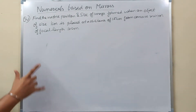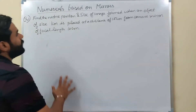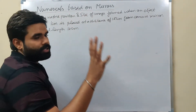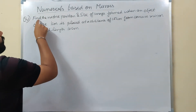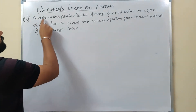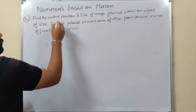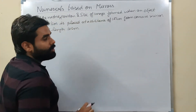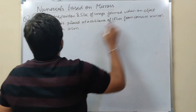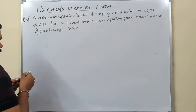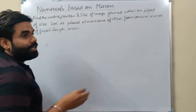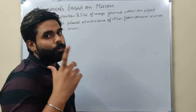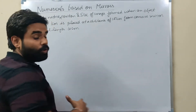Today we do numericals on mirrors. The first question I have written - don't be scared, it looks big but it's very easy. Question: Find the nature, position and size of image formed when an object of size one centimeter is placed... What do we need to find? Nature, position and size of the image.